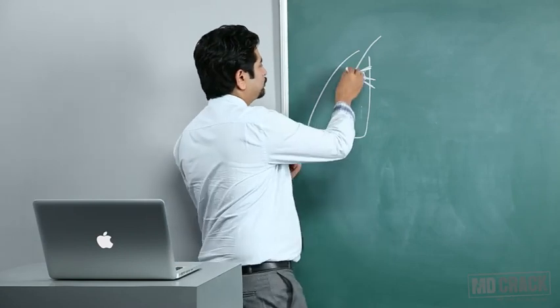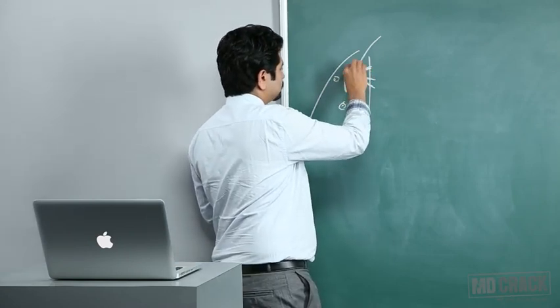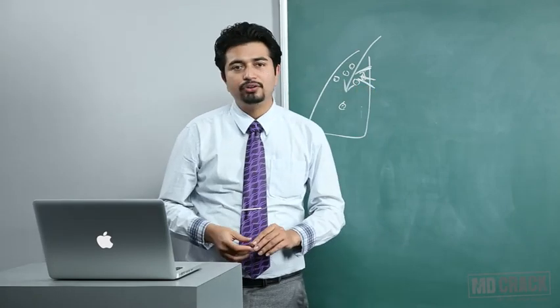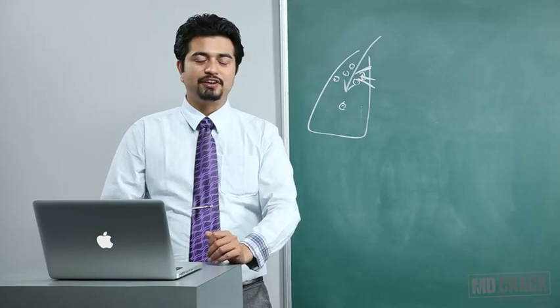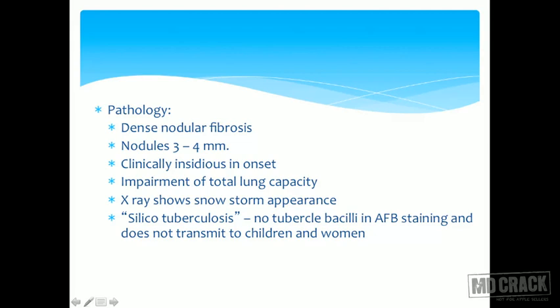Ultimately, the lymphatic channels going to the hilar lymph nodes get blocked. So you have hilar lymphadenopathy and multiple lesions in the lung — a collection of 3 to 4 millimeter nodules on the X-ray (roentgenogram). You have fine nodules on X-rays, dense nodular fibrosis, and hilar nodal enlargement because the macrophages died midway to the hilar nodes. The onset is clinically insidious, and impairment of total lung capacity is observed as an initial symptom. These nodules are found mainly at the upper lobes of the lung.